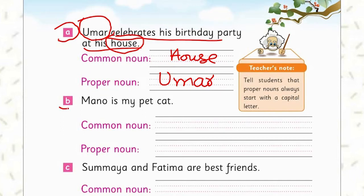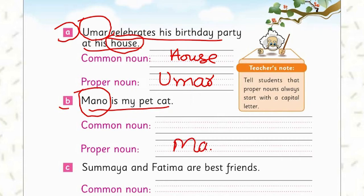Sentence B: 'Mano is my pet cat.' Here you can see that Mano is specific — it is the specific name of the cat, so it's a proper noun. And cat is general. We are talking about the same cat, but Mano is the specified name, while cat could be any cat.